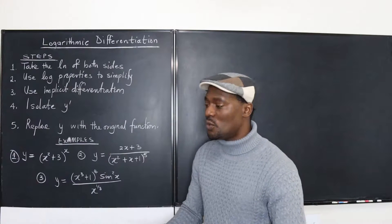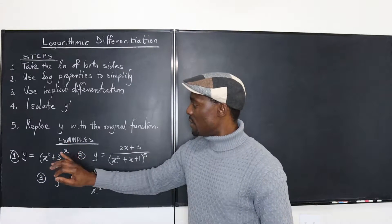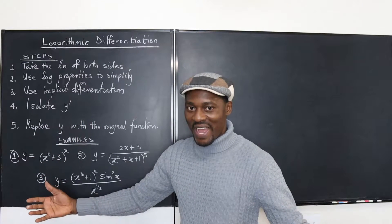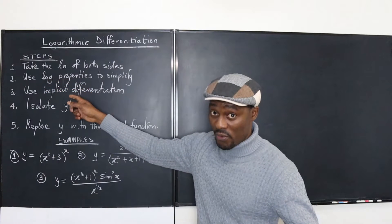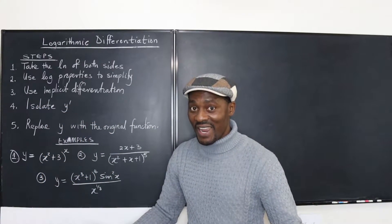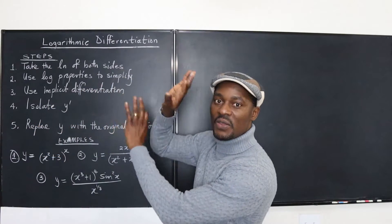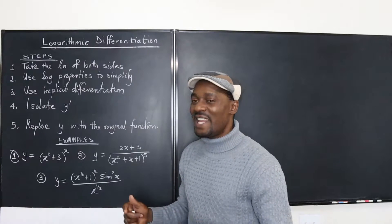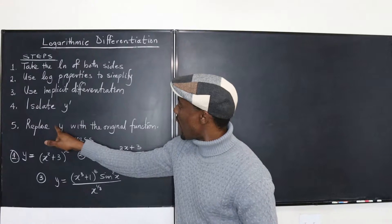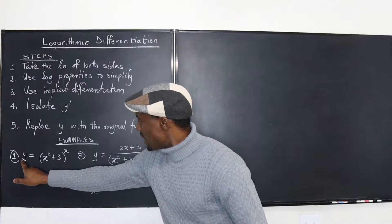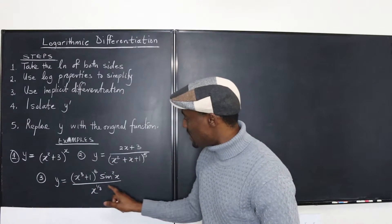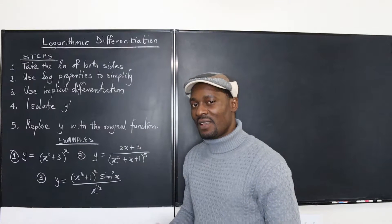Let me just read out the steps. The first thing you want to do when you get a function where the power is a function on its own — because you can't use the power rule in this case — is take the natural log of both sides. The next step is to use the logarithm properties that you know to simplify. After that, differentiate both sides using implicit differentiation, and finally isolate your y prime. However, do not leave your answer containing anything other than x. The y you get in your answer must be replaced with the original function.